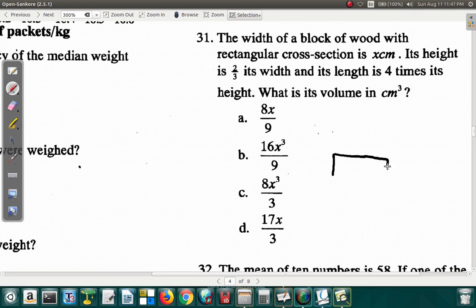Let's say this is the block of wood. Now, the width is x. So it is x wide. Its height is two-thirds its width. That means two-thirds x, right? And the length is four times its height. This means four times the height, four times two-thirds x.